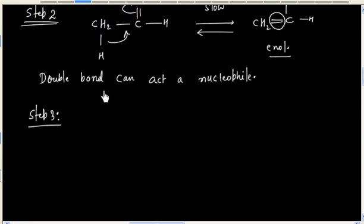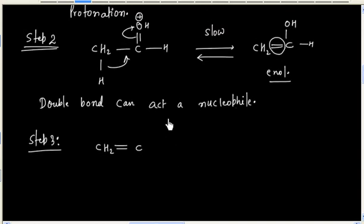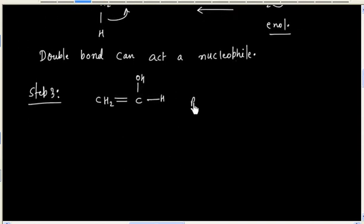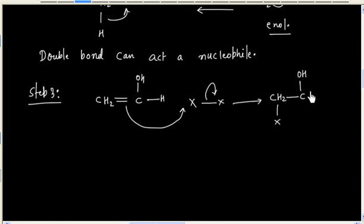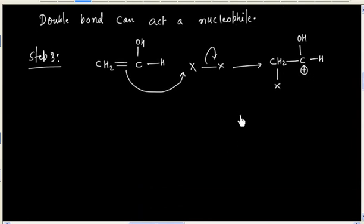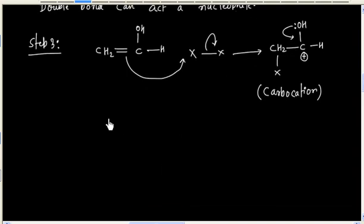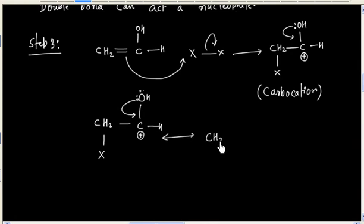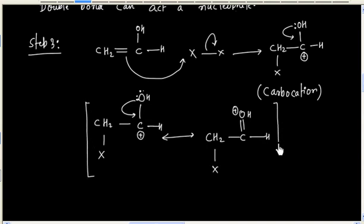In the next step we will have electrophilic addition. So we generate a carbocation, and this carbocation is resonance-stabilized. There are two resonating structures. This lone pair can be converted into a bond pair. So these are the two resonating structures — resonating structure 1 and resonating structure 2.